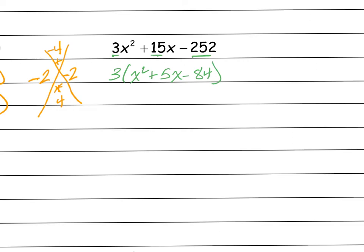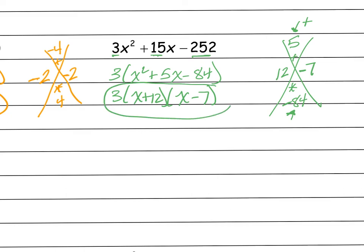So then I need two numbers that multiply to be negative 84 and add to be 5. So what multiplies to be negative 84? I think that's going to be 12 and 7. And it's a negative down here. That means one of my answers has got to be negative and it's a positive up here. So that means 12 is going to be positive and 7 is going to be negative. So I've got 3 times x plus 12 times x minus 7.